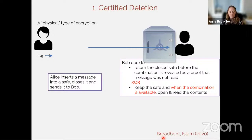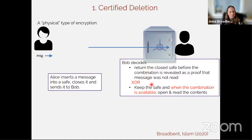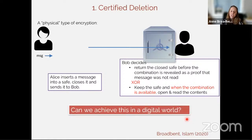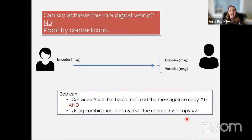This is an exclusive or: Bob can do the first option or the second one, but not both — like at a restaurant when they say 'soup or salad,' they mean one or the other. Can we achieve this in a digital world? If the information is conventional classical information, the answer is a resounding no. If the encoding is a classical message, Bob can make two copies — use copy one to convince Alice he did not read the message, and use the second one, wait till the key is revealed, and decode.